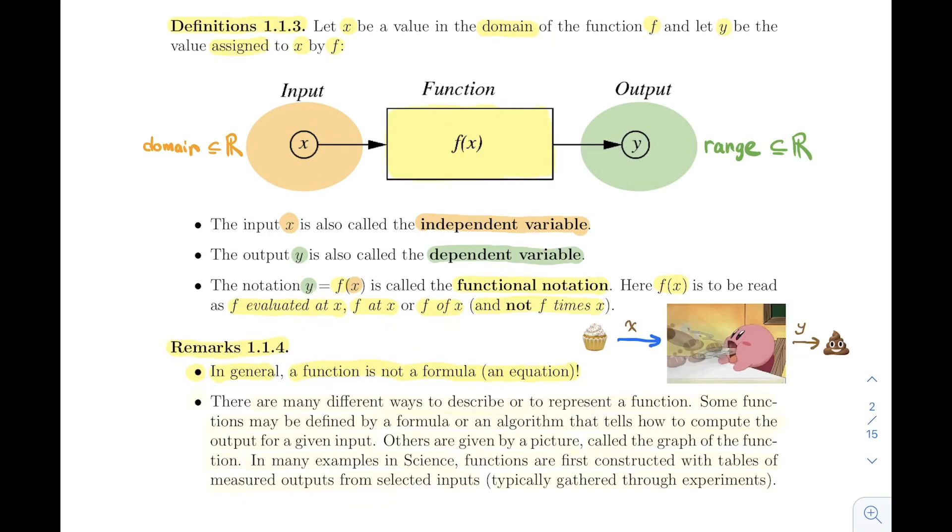Of course, if you have an equation for a function - if you know that f(x) is x squared plus one, and if you put minus two, you get minus two squared which is four plus one and you get five - so you have an explicit way to compute the output. This is actually a function that is defined algebraically because we have an equation. But in general, there's a lot of examples of functions that are not defined by equation.